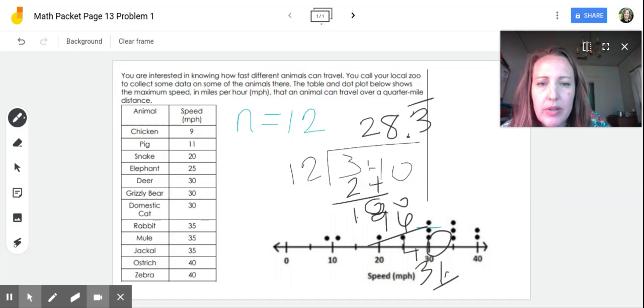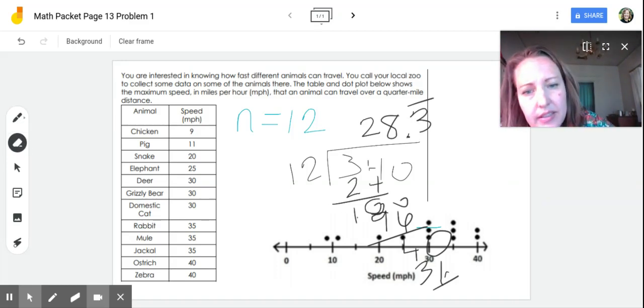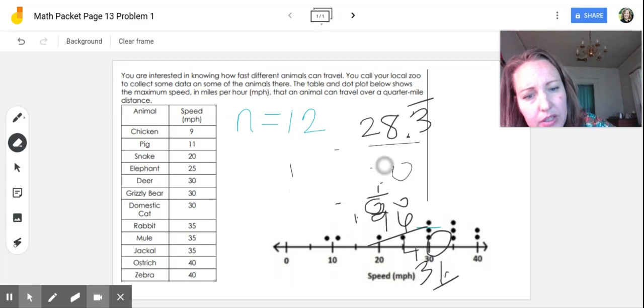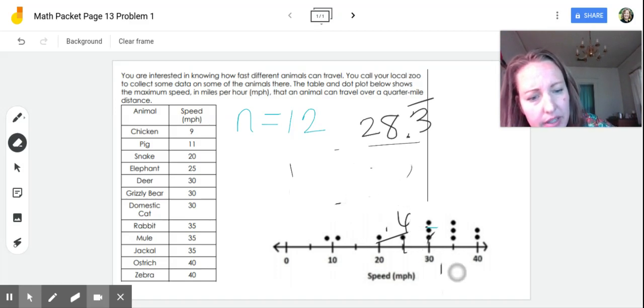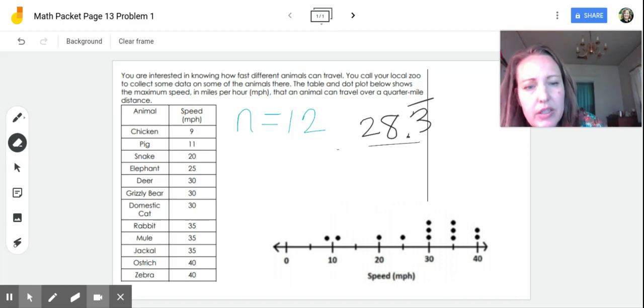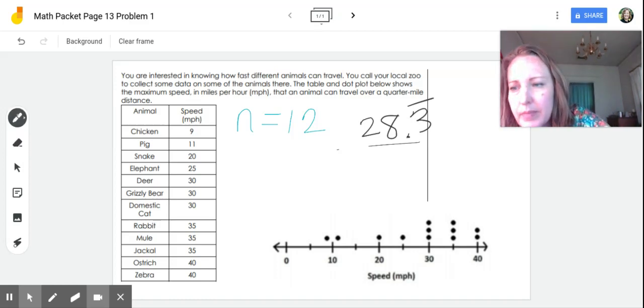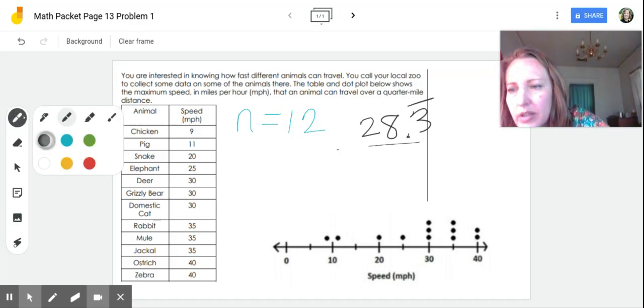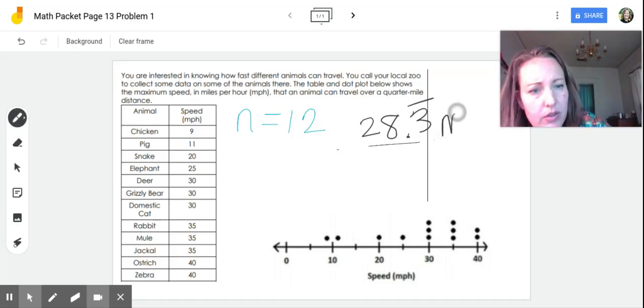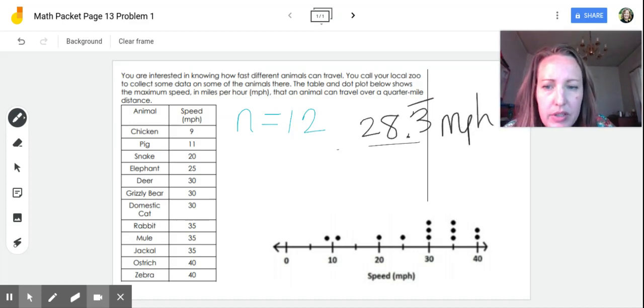So I am going to erase this information down here because it's kind of covering up what we're doing. So my average is 28.3 repeating or just 28 miles per hour, right? Miles per hour, okay, is my average or my mean.